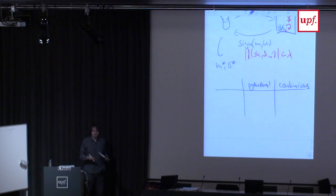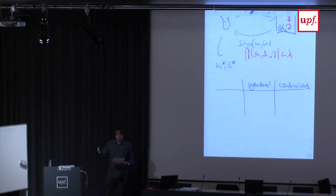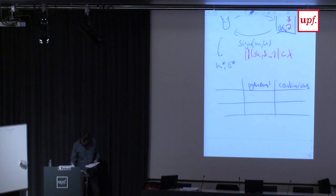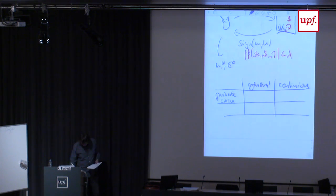There has been work on using provable security in the context of side channels. Maybe one of the best known works in this aspect is private circuits by Ishai, Sahai, and Wagner from 2003, which received a test-of-time award.